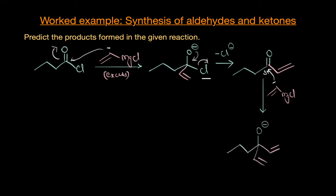This gives us an intermediate which on acidic hydrolysis finally gives us a tertiary alcohol. So as you can see, the acid chloride gets reduced all the way to tertiary alcohol when we react it with excess Grignard reagent. Now let's see what product we get when we react acid chloride with Gilman's reagent.